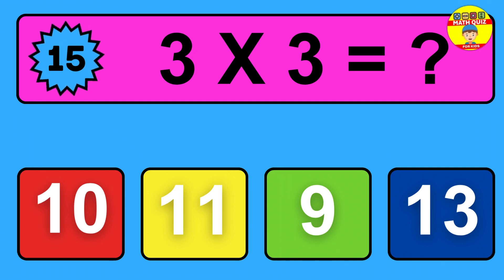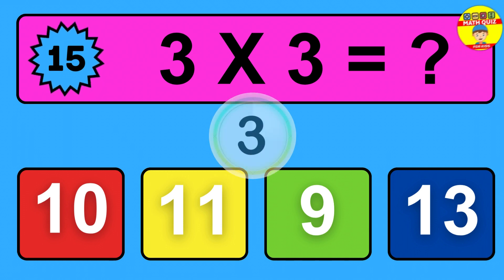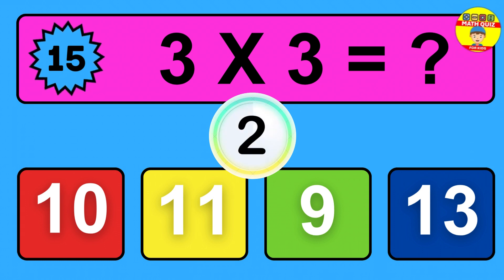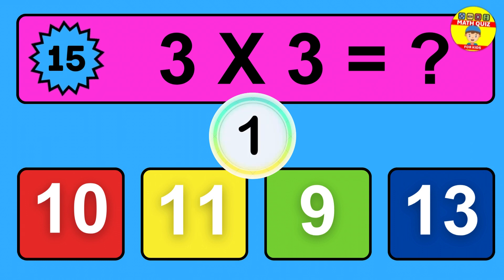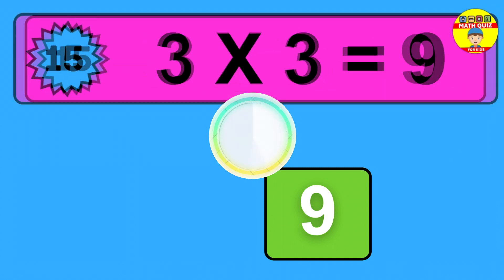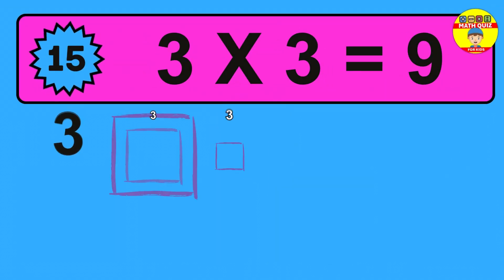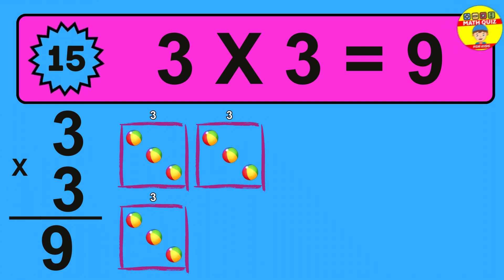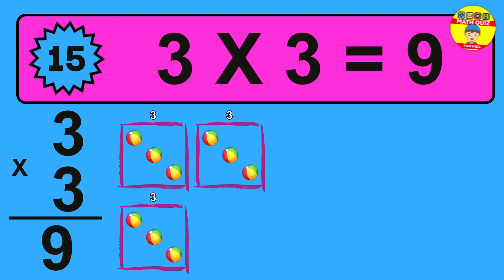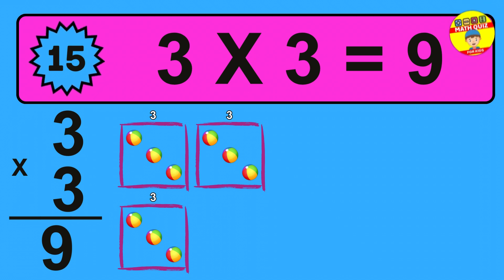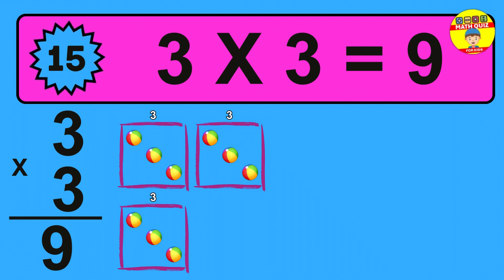Question 15: 3 times 3 equals what? The answer is 3 times 3 is 9. To calculate, we have 3 groups with 3 balls each one. So how many balls do we have? 9 balls.